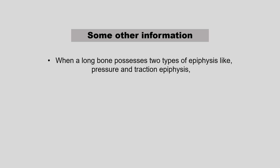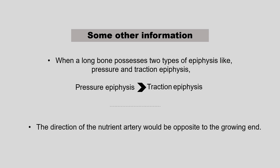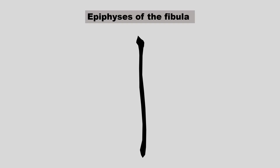To understand the violation, we should also know that when a long bone possesses two types of epiphysis — pressure epiphysis and traction epiphysis — the ossification center in the pressure epiphysis will appear earlier than that of the traction epiphysis. Additionally, the direction of the nutrient artery would be opposite to the growing end.